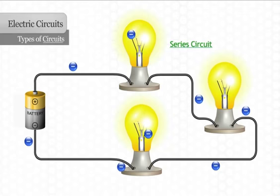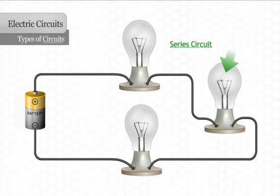The problem with a series circuit is that when one light burns out and its filament breaks, it creates a gap in the circuit. All the lights go out because electricity won't be able to flow to the other bulbs.